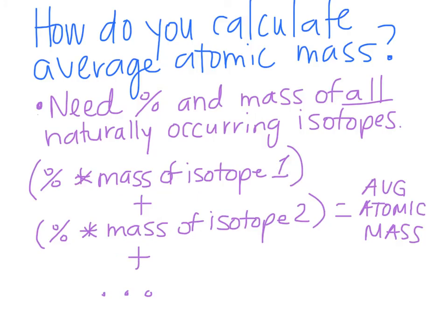So how do you actually calculate average atomic mass? There are two things that you need. You need the percentage or the abundance of each isotope, and you need the mass of each isotope. You have to make sure that you have the percentage and the mass for all of the naturally occurring isotopes for that given element.